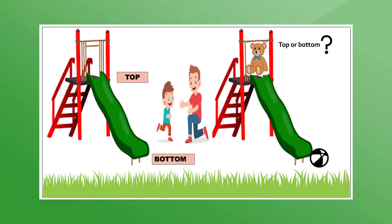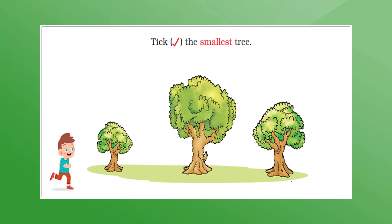One day Rohan went to a park. He took his teddy bear and ball along. He wanted to run in the park, so he put his toys on a slide. The highest position of the slide is the top of the slide; the lowest position is the bottom of the slide. Can you tell if the ball is at the top or the bottom of the slide? The ball is at the bottom of the slide and the teddy is at the top.